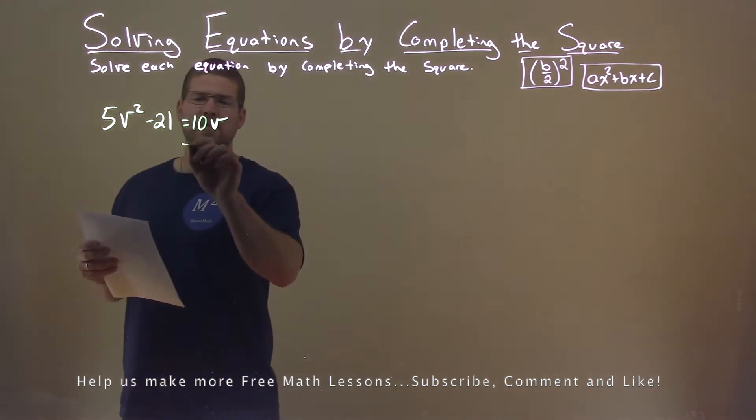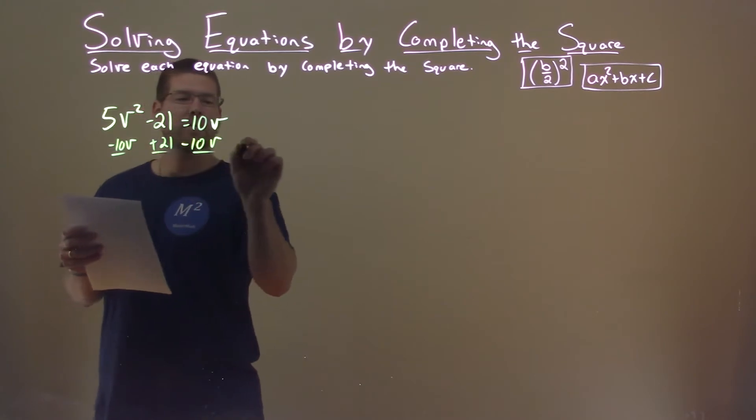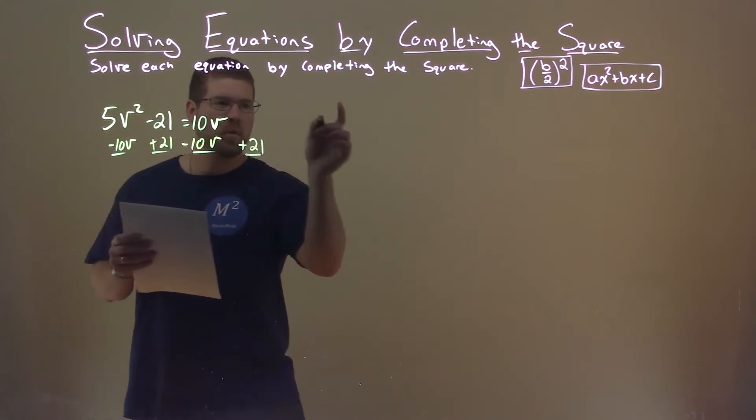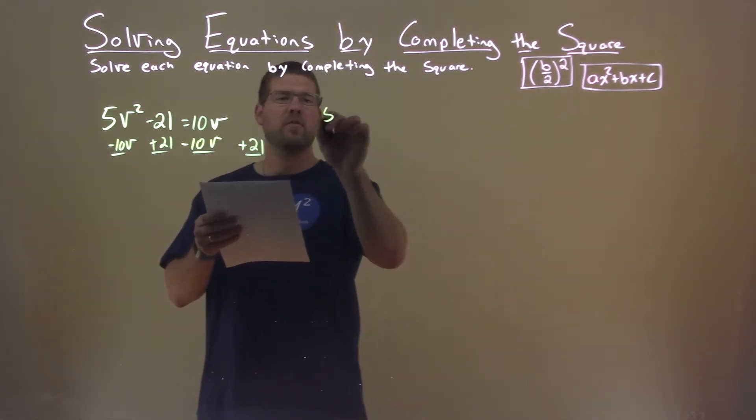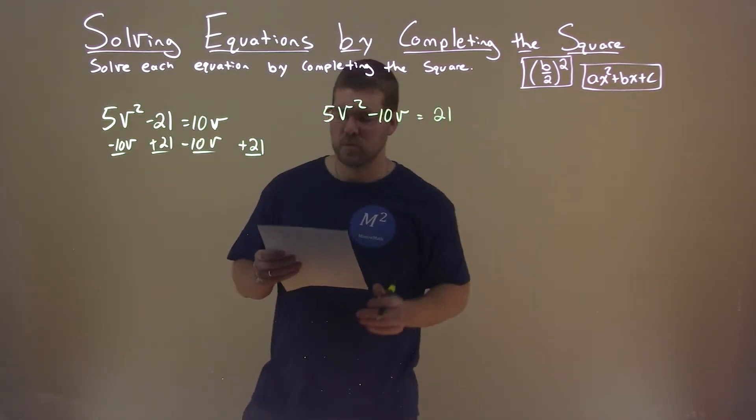I'm going to first subtract 10v from both sides, and I'm going to add 21 to both sides. So what does that come out to be? That's 5v squared minus 10v equals a positive 21.